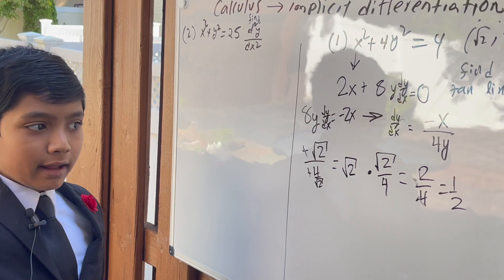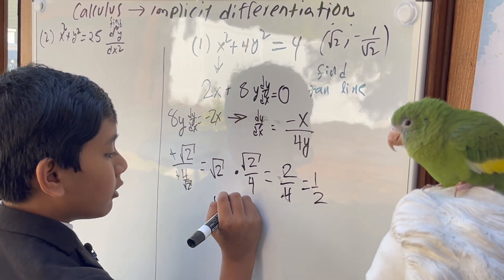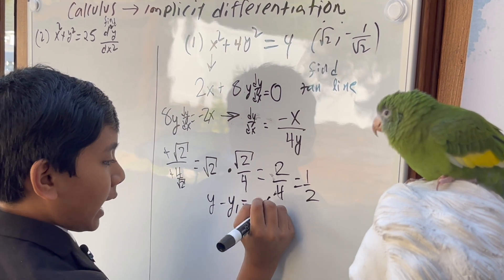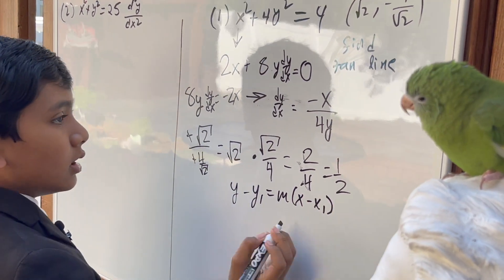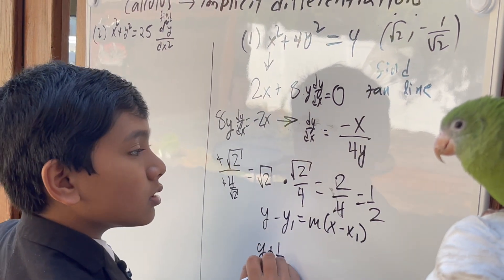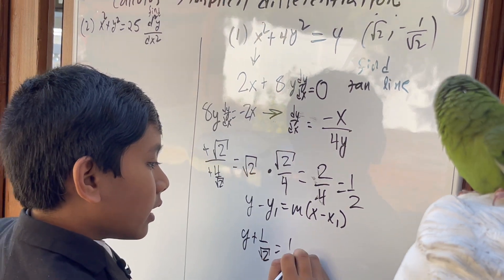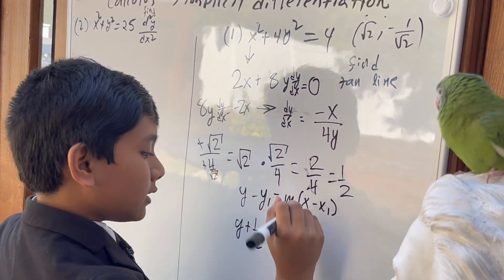Now to find the tangent line, we have y minus y₁ equals m times x minus x₁. So, y minus y₁ is this, equals m times x minus x₁.